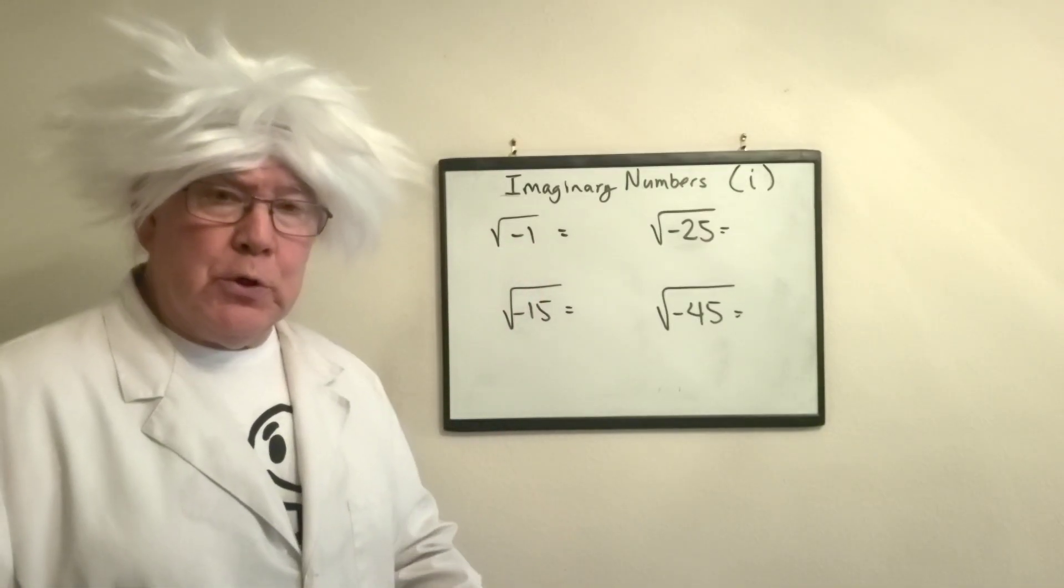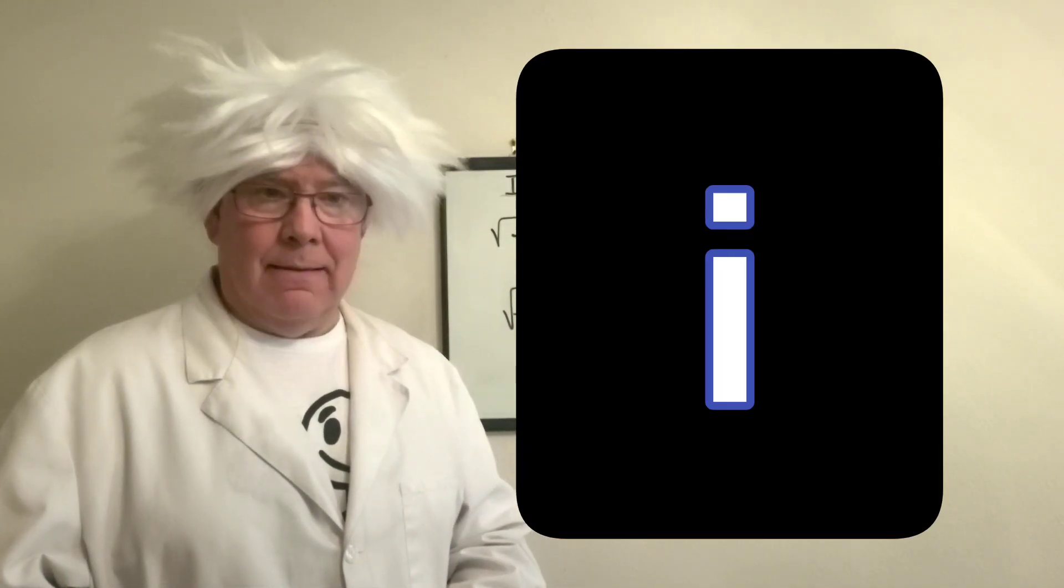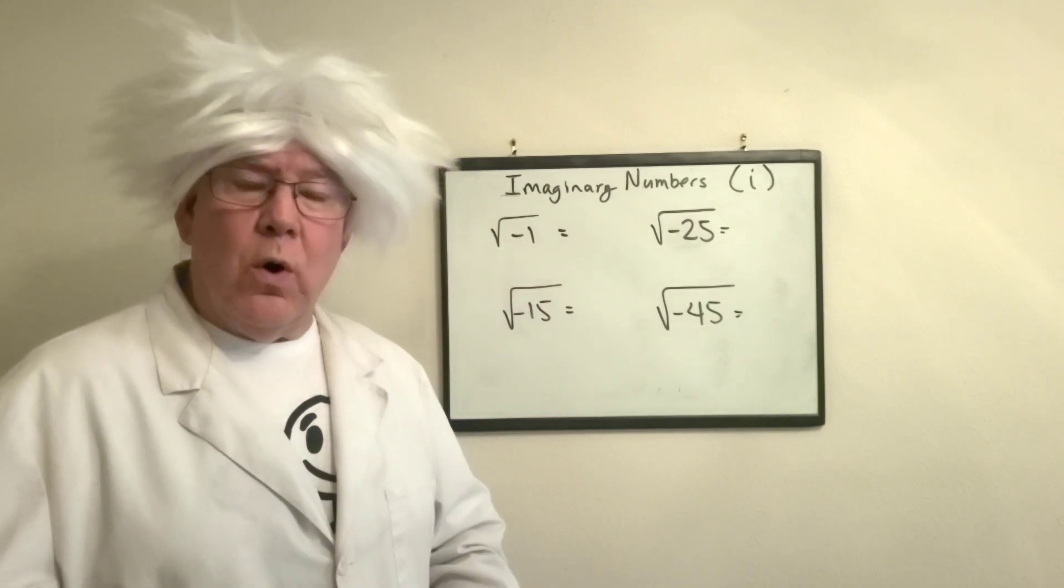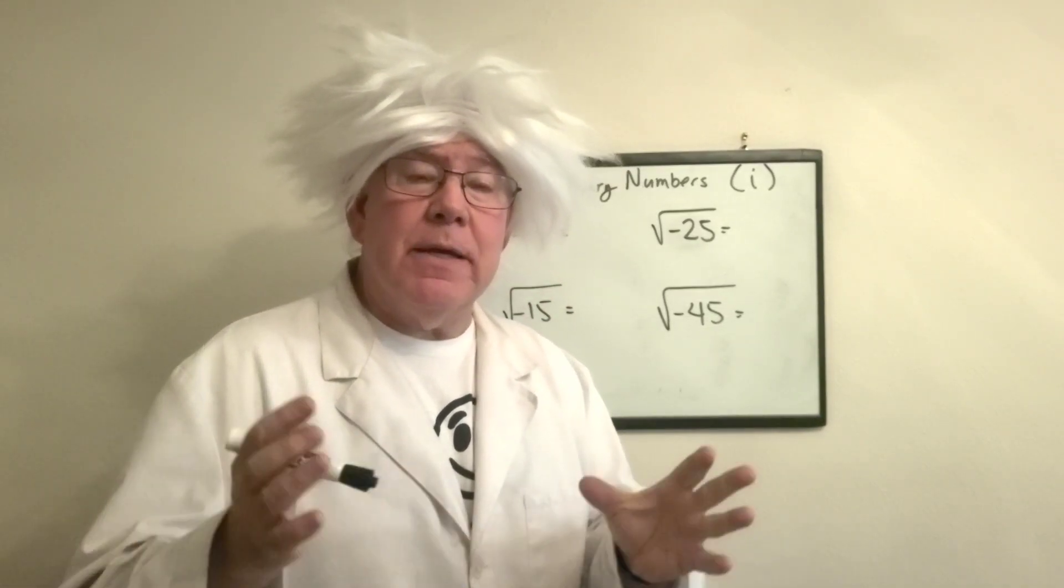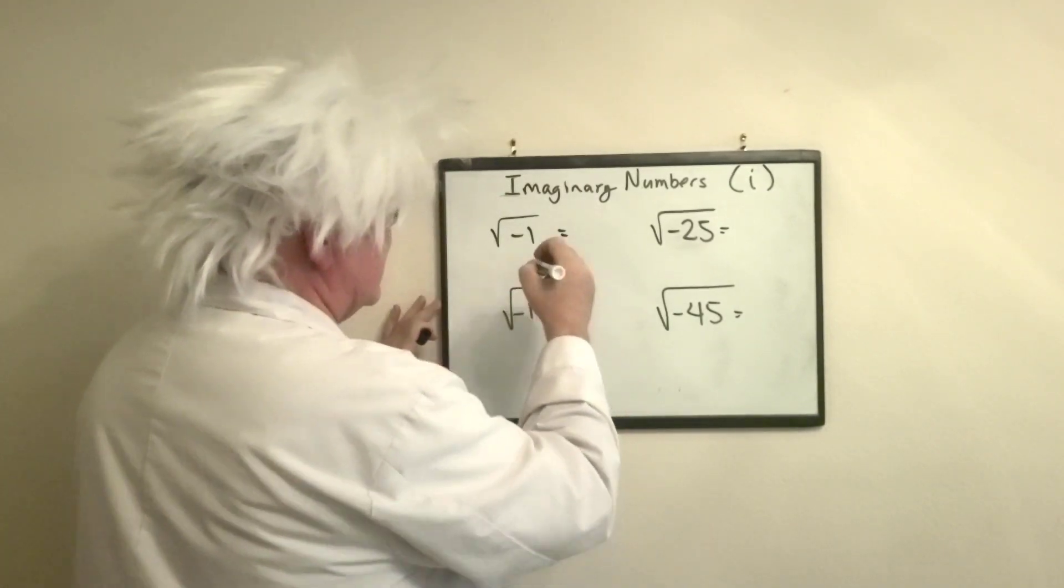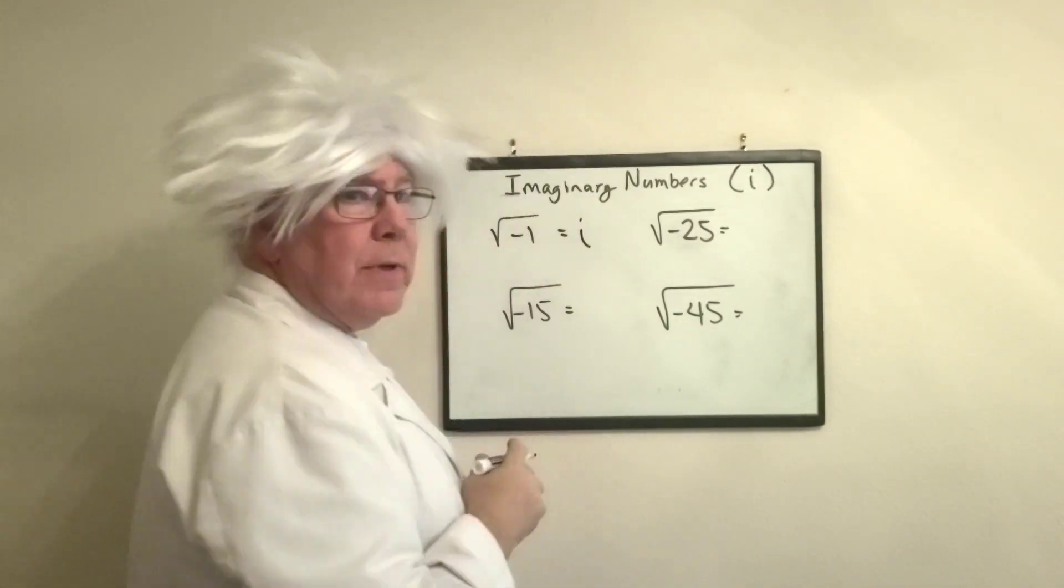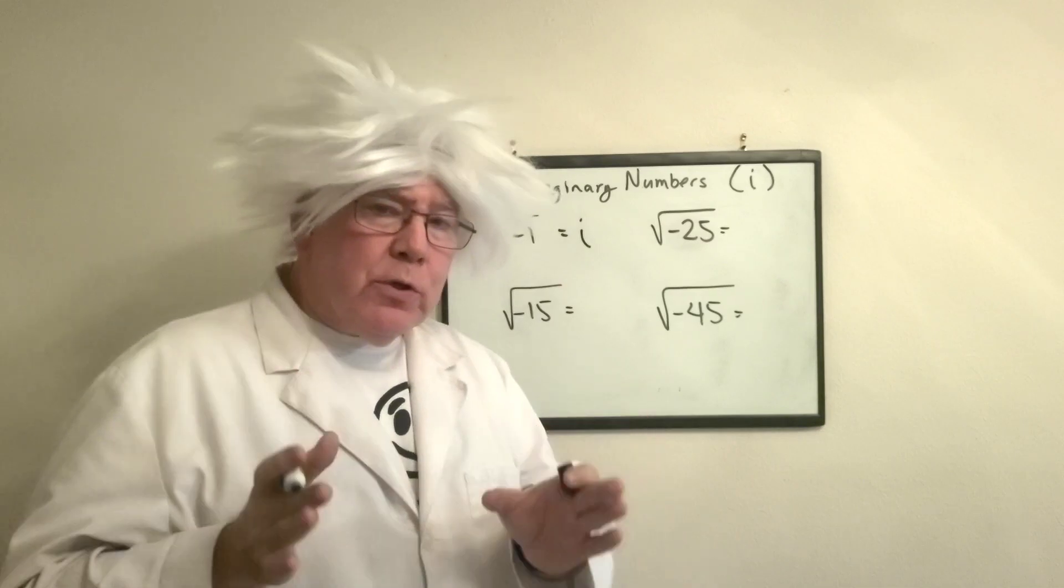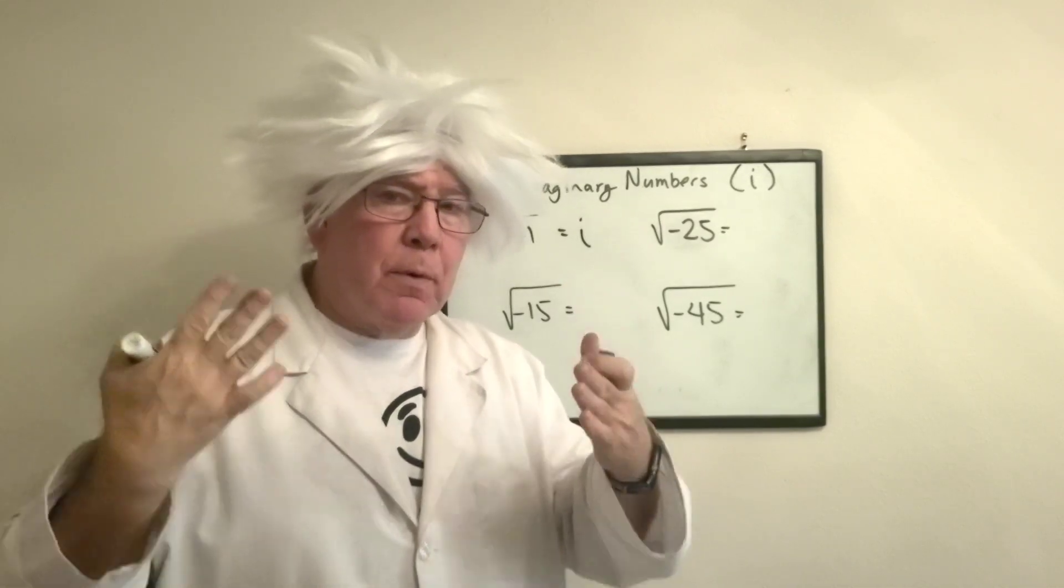I'm going to introduce you to the letter i. The square root of negative 1, we say it's imaginary because it's no real solution. So we say that it is i. Everything now, when you see me do the square root of negative 1, I'm going to replace it with i.